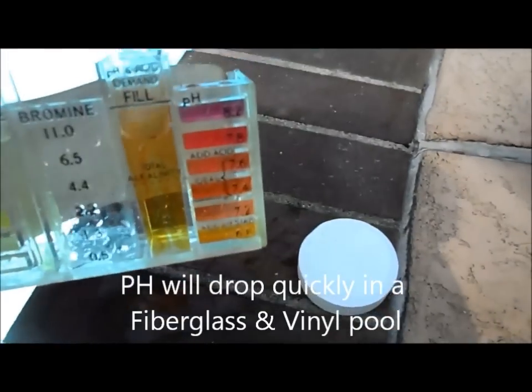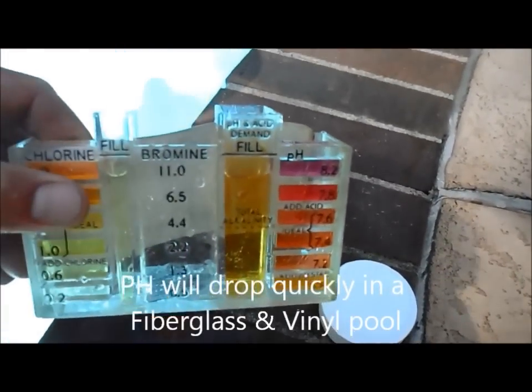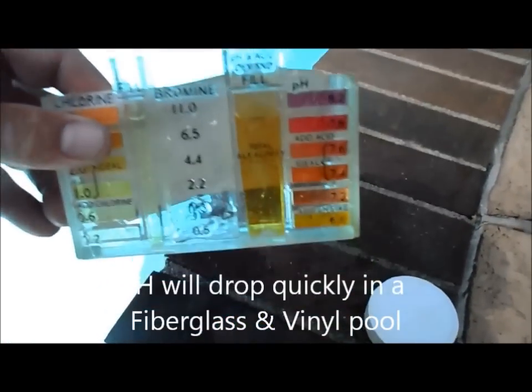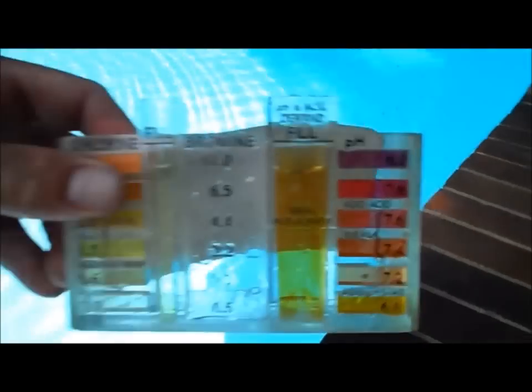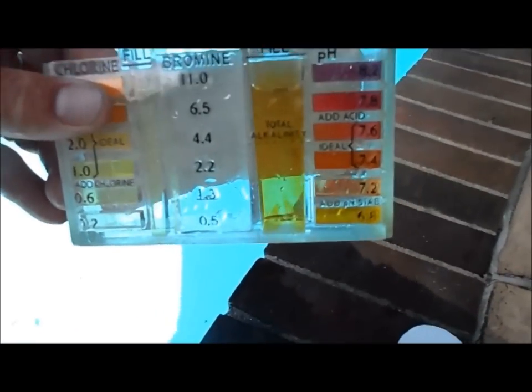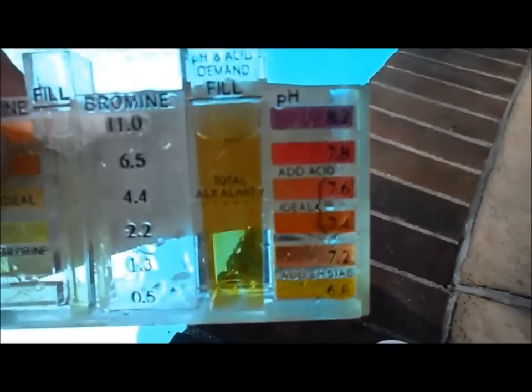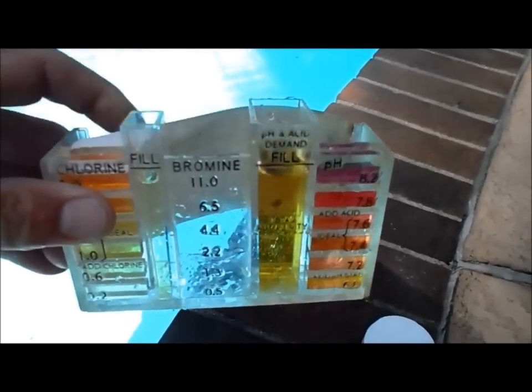If you're going to use trichlor in your vinyl pool or fiberglass pool, you definitely want to make sure you have soda ash on hand. As you can see, this pool's pH has dropped below 7.2, so I'm going to add some soda ash to bring it up.